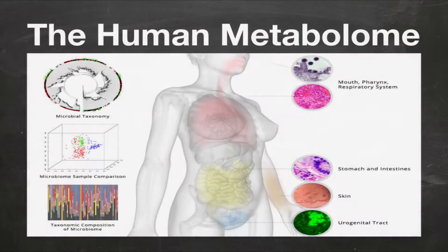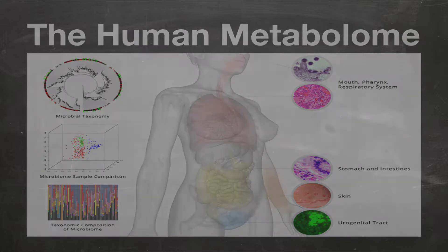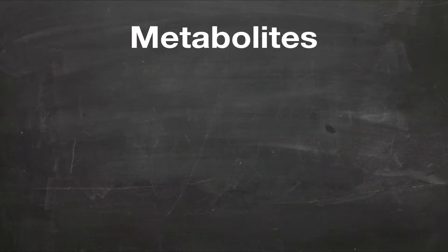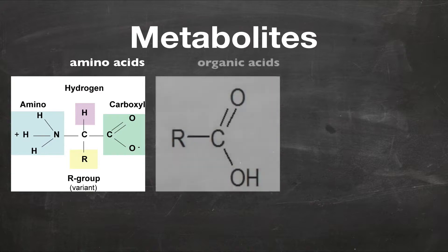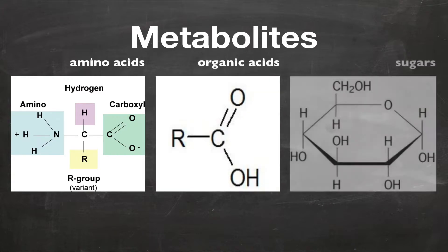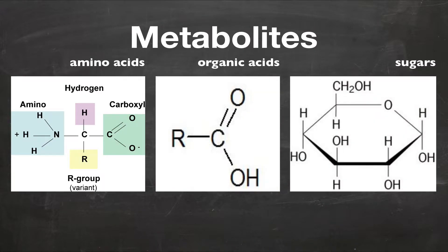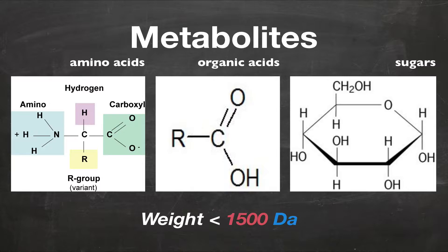The human metabolome is defined as the complete collection of metabolites found in the human body. Metabolites are small molecule chemicals like amino acids, organic acids, and sugars that typically have a molecular weight less than 1500 Daltons.